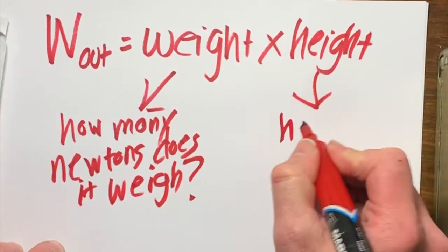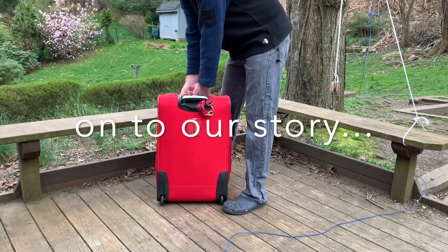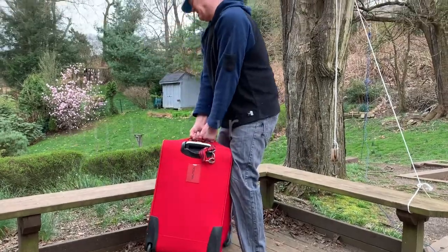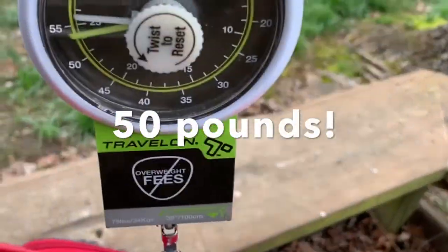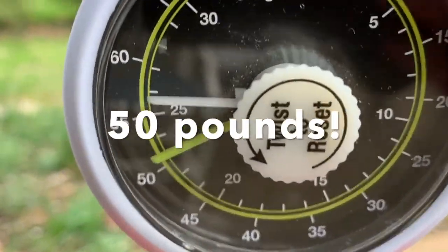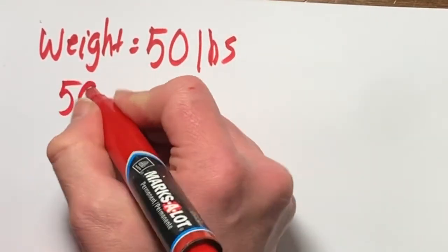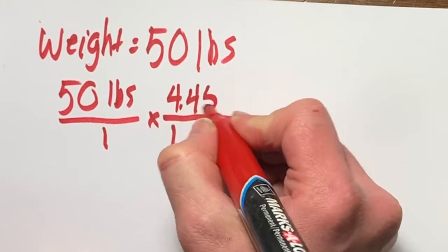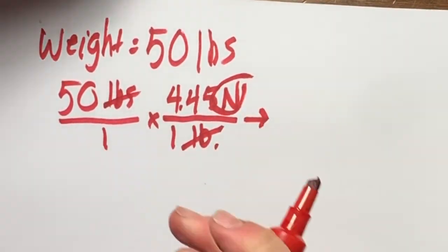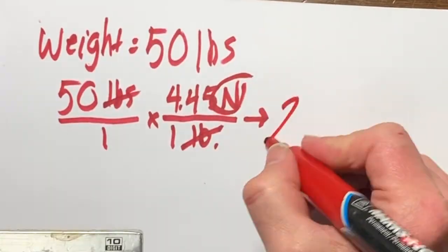And that 50 pounds, when you convert it to newtons, you're going to have to multiply by 4.45. So you're going to have 223 newtons, basically.